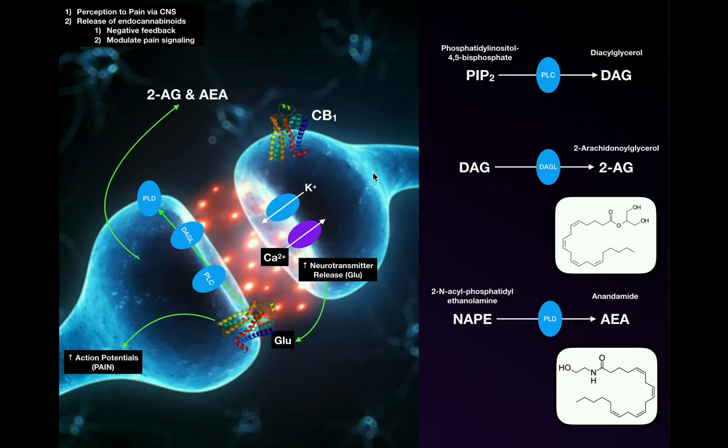Action potentials running down the axon will trigger the opening of voltage-gated calcium channels in the terminal button of this axon. Calcium will be influxing into this cell from the extracellular fluid to the intracellular. We are not actually going to have potassium efflux. Potassium is going to remain inside the cell. But we have calcium influx, and when we have calcium influx, that's going to depolarize the membrane of the cell. That's going to trigger neurotransmitter release into the synaptic cleft.